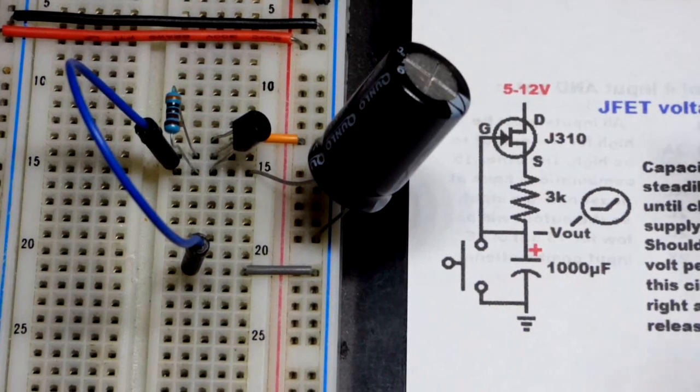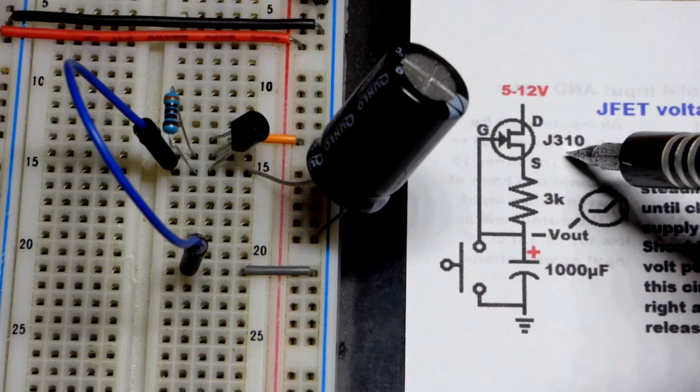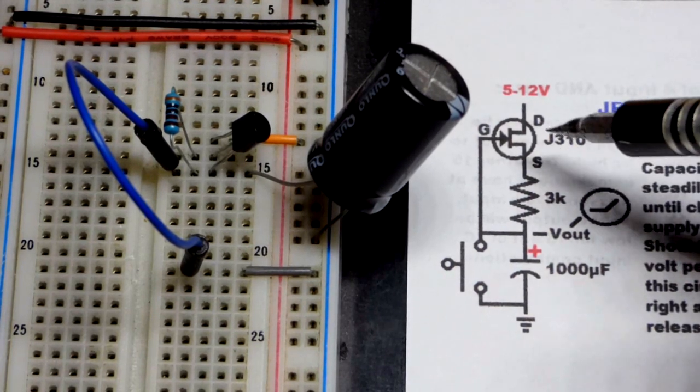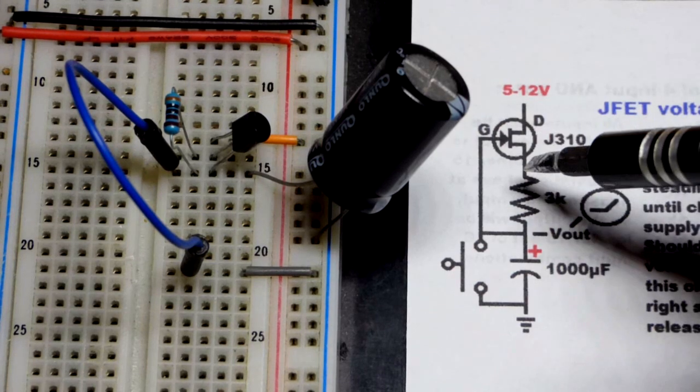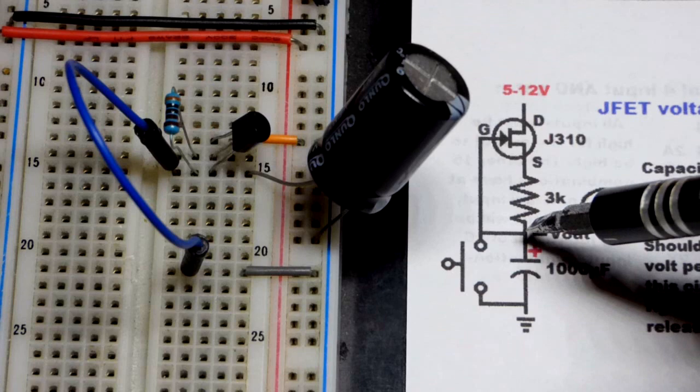So now in this video we're going to make a voltage ramp using a JFET, the J310. It's the only JFET I have, N-channel depletion mode. It passes up to a certain amount of current, but when you add a resistor it limits the current even more. You end up with a current source.